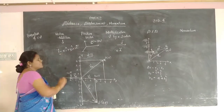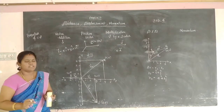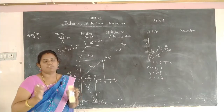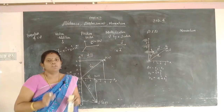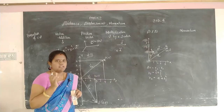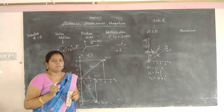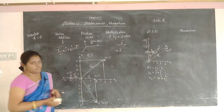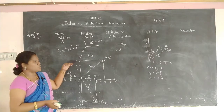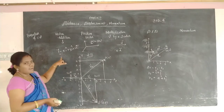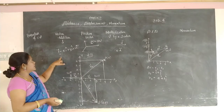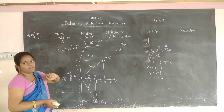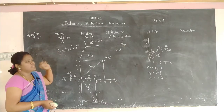Position vector is nothing but the location. The position vector tells the location of one vector, one object. It is always denoted as R vector = X·i + Y·j + Z·k. This is the position vector.